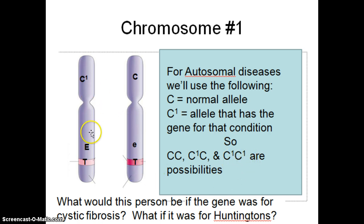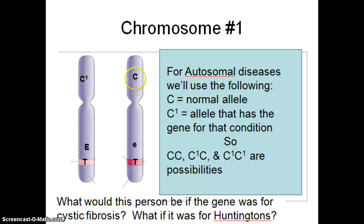If a person had the gene for cystic fibrosis — C-prime C — would they actually have the disease? And if a person had the gene for Huntington's — C-prime C — would they have it? Pause and write down your answer. If you said the cystic fibrosis person would carry the disease — correct! If you said the person with Huntington's disease, having that one C-prime allele, would actually have it — you are also correct!